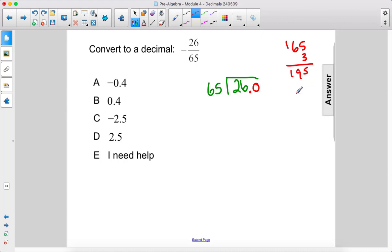Does it go in 4 times? Let's try. 65 times 4 is 20, so 24, 25, 26. Look at that. It goes in 4 times. So I'm going to put the 4 here. 4 times 65 is exactly 260.